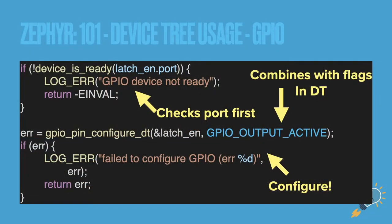We check if it's ready using `device_is_ready` — this also checks that the port is not null. I've seen older examples that did a null check separately, but that API call now does both, so you don't have to check for null separately. Then we run `gpio_pin_configure_dt`.